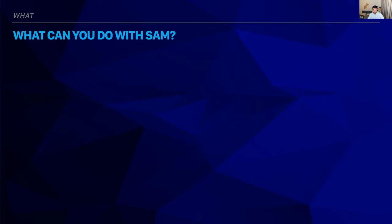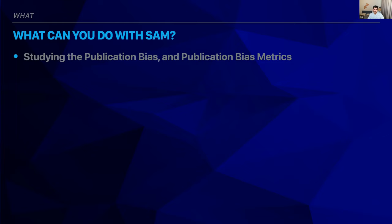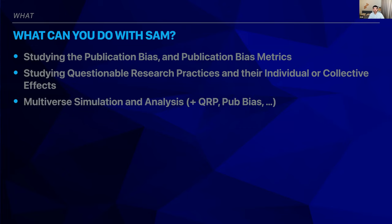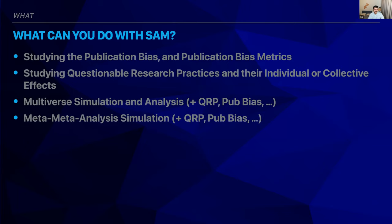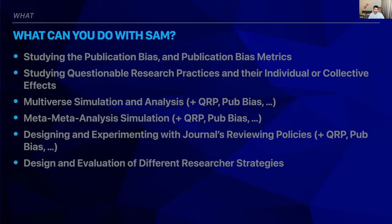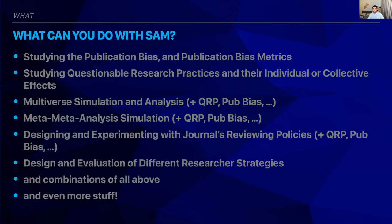With SAM you could: study publication bias and publication bias metrics, study questionable research practices and their individual and collective effects, do multiverse simulation and analysis including QRPs and publication bias since they're just different modules, do meta-meta-analysis simulation, design experiments for journal reviewing policies, design and evaluate different researcher strategies. If we know how researchers think, then maybe we could simulate different pathways and tell them: if you think about this a different way, it might not have been as detrimental. And as it's extensible, we could just add some other new method and see how that affects the whole system.